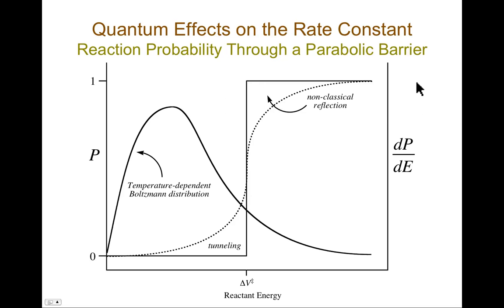So on the one hand, you might say, well, that's wonderful because quantum mechanics has made my life easy. I get a cancellation between the extra rate associated with tunneling compared to the diminution of the rate associated with non-classical reflection. And that would be true if you had just as many systems tunneling as you had being reflected.